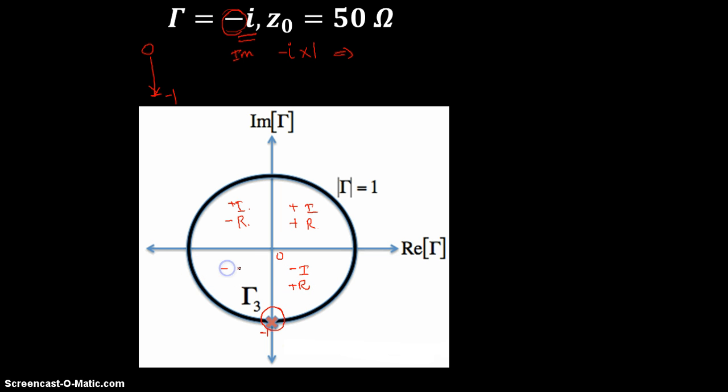And this forms your negative imaginary part and your negative real part. So you can see that this is a complex plane on which gamma can take a value anywhere between 0 and 1. So this forms your reflection coefficient plane and the basics of Smith Charts. And that's the end of part 1.